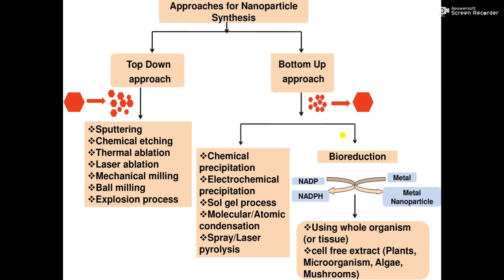The second category is bioreduction. In bioreduction, we use the whole organism, or tissue, or simply cell-free extracts — for example, extracts of plants, microorganisms, algae, or mushrooms. This is a clear green approach through which we can synthesize different nanoparticles to reduce particle size and then target a particular area.